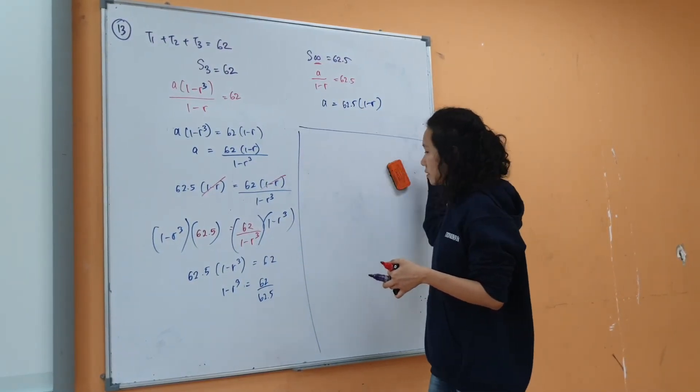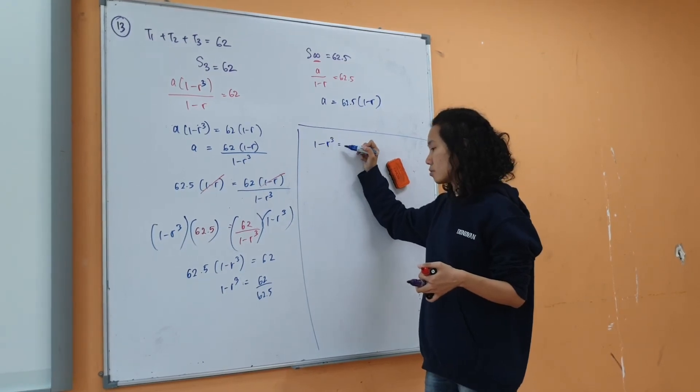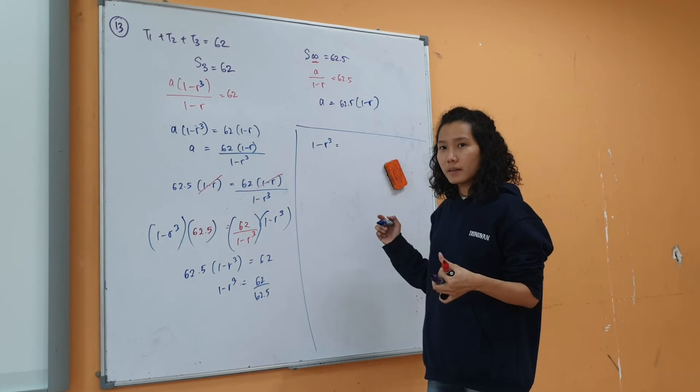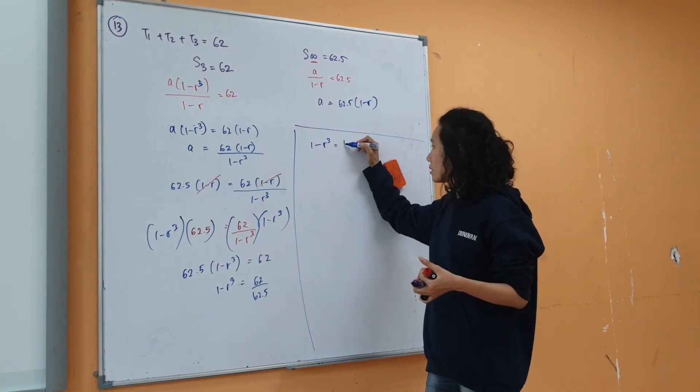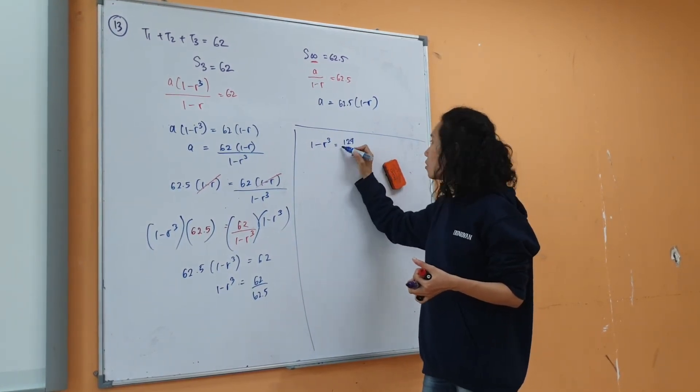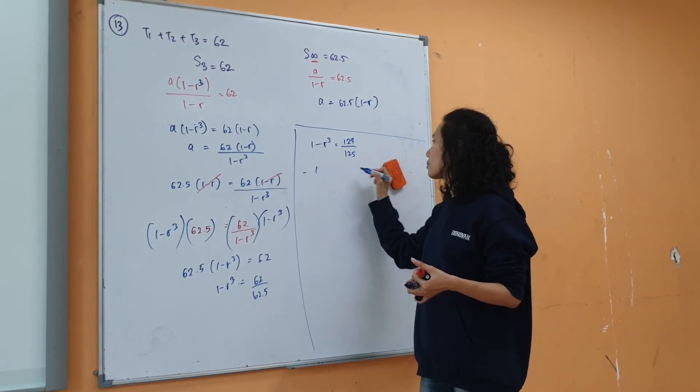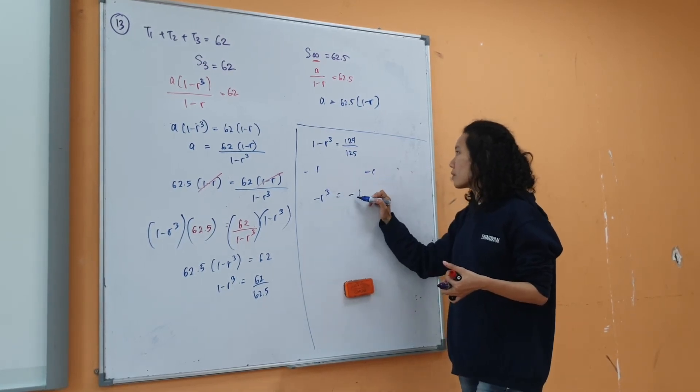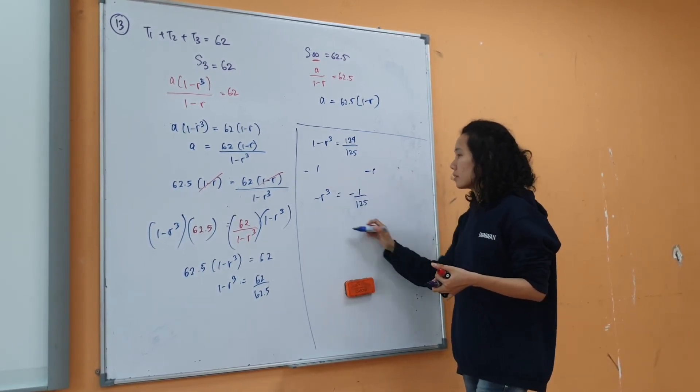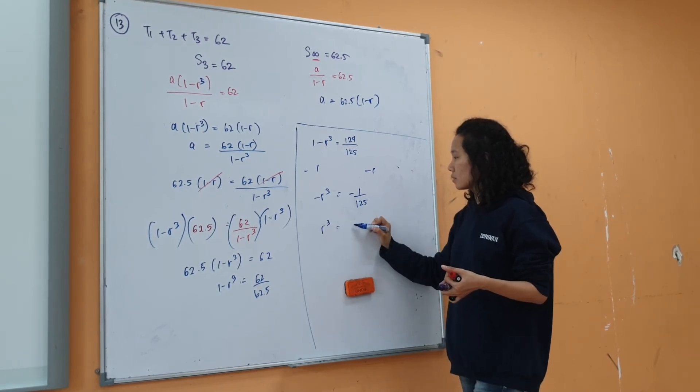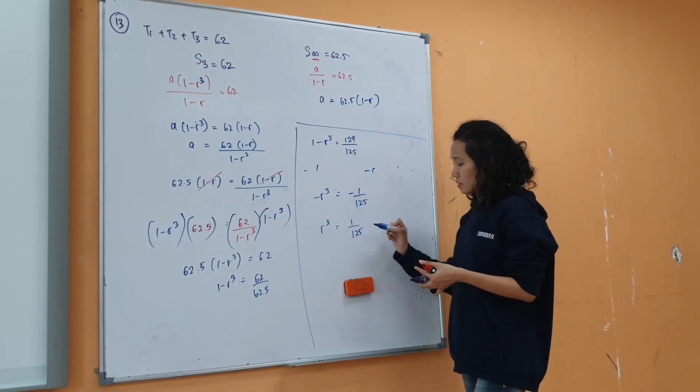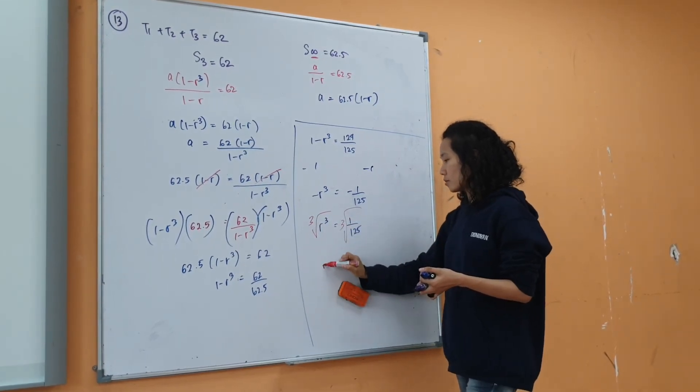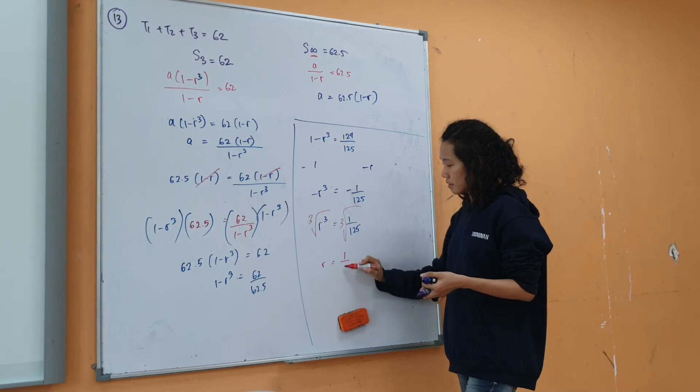So you're left with 62. Then what do you get? 1 minus r^3 equals to 124 over 125. Negative 1 over 125. Times negative 1. And then cube root. So r equals to 1 over 5.